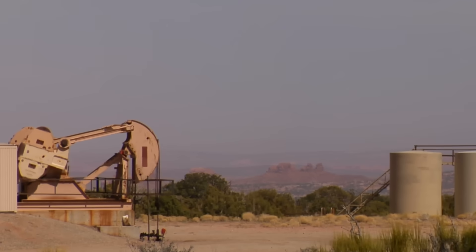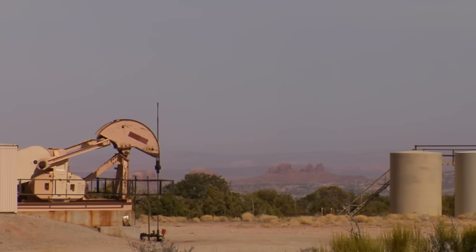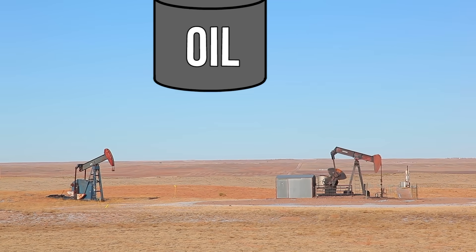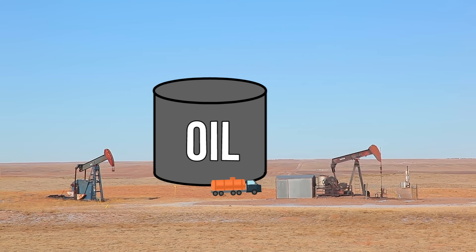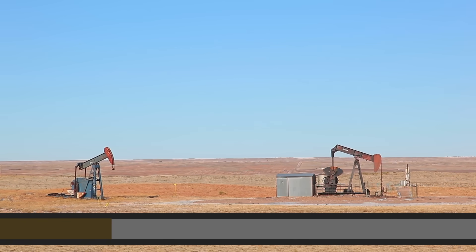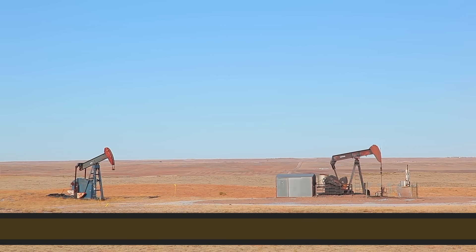As for what happens to the oil once it is pumped, there are two main options. Depending upon location, some derricks will fill a large container with the oil that is then trucked away at certain intervals, or the oil is directly pumped to a central holding station through a pipeline.